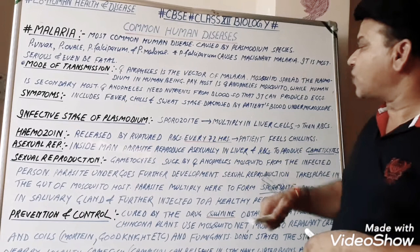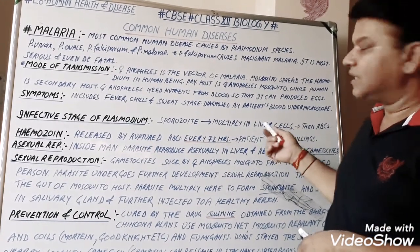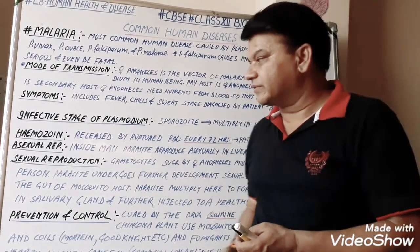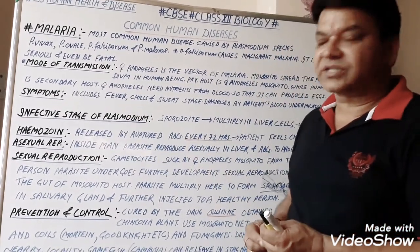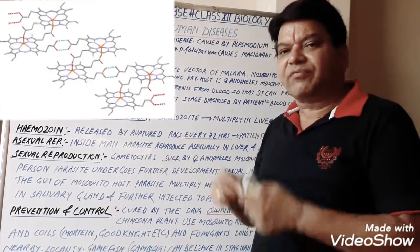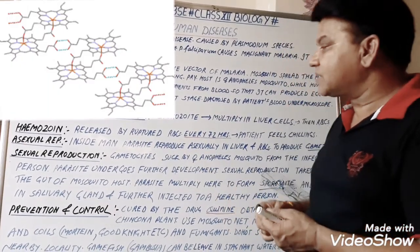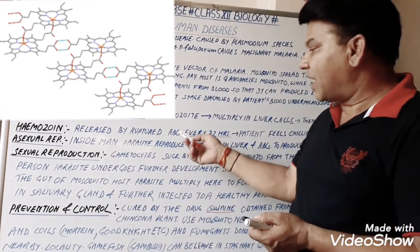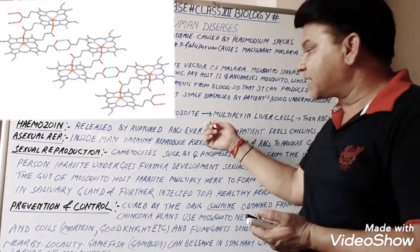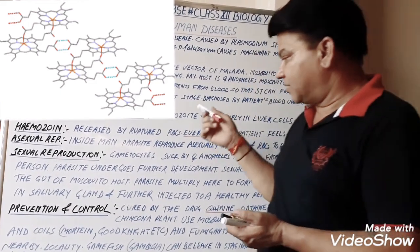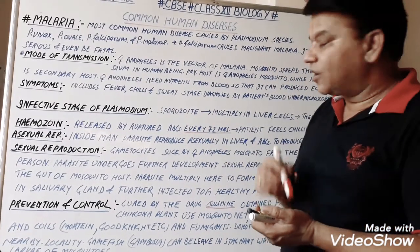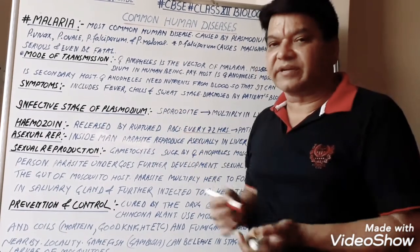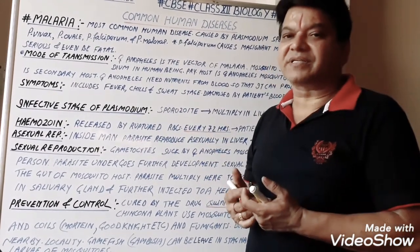The sporozoite multiplies in liver cells and then in red blood cells (RBC). This is also a very important question: what is haemozoin? Haemozoin is a chemical substance which is secreted or released by ruptured RBC. The parasite is inside the RBC, and when the RBC ruptures, haemozoin is secreted. At that time, the patient has a chilling effect.